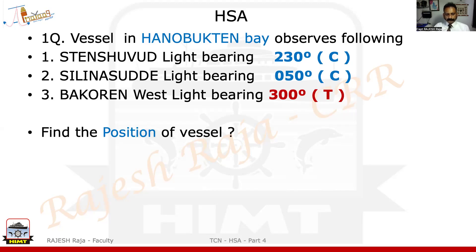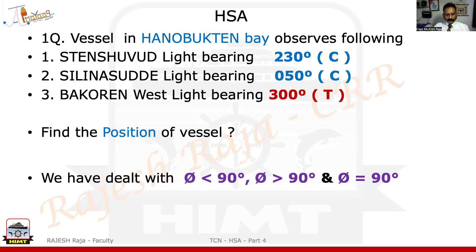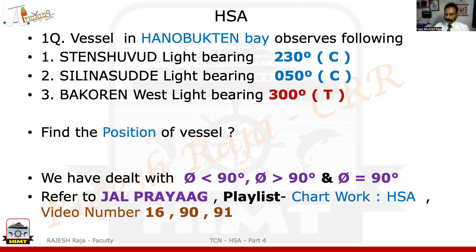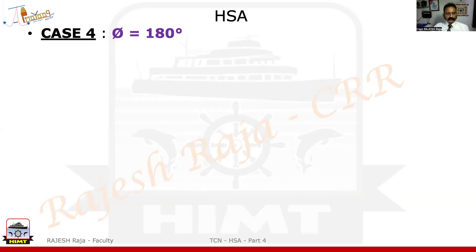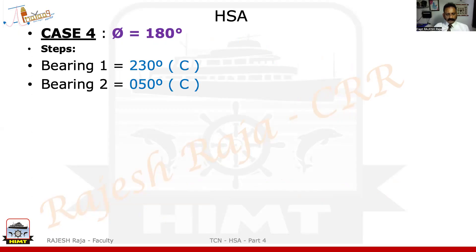Just a quick recap — theta less than 90, and greater than or equal to 90 have been done in the previous videos. Please go to the playlist of chart work and HSA; you'll find the video numbers 1690 and 91. In this first question, I'm going to deal with case number four, which is theta equal to 180. So let us look at the two lighthouses which were given in compass. Heading is not given, so I'll have to use horizontal sextant angle. Bearing number one and bearing number two — the difference between the two is 180.